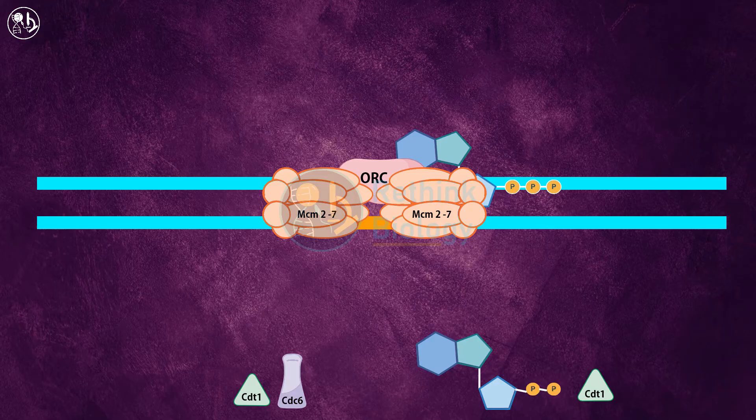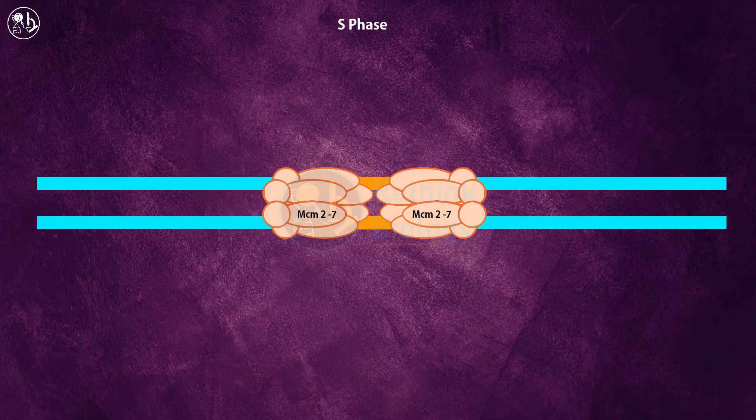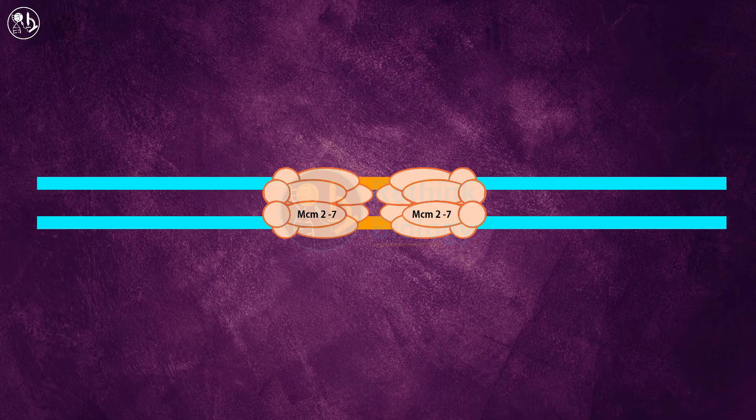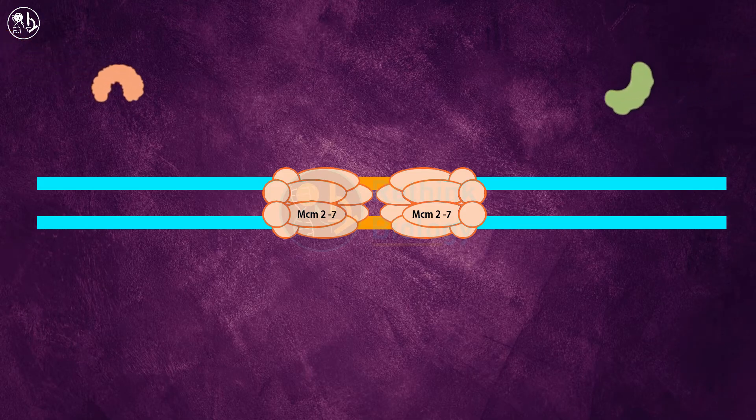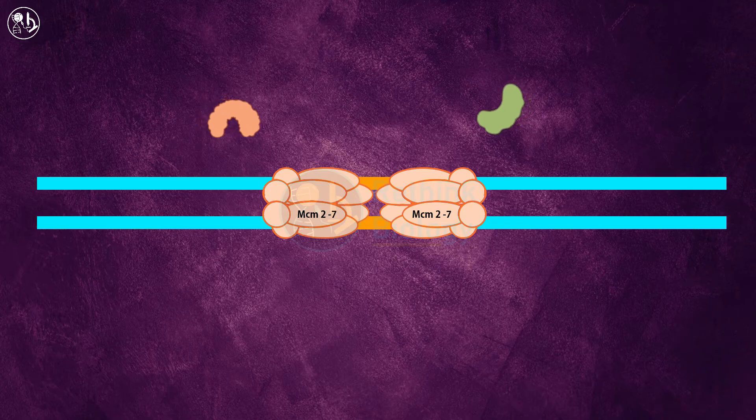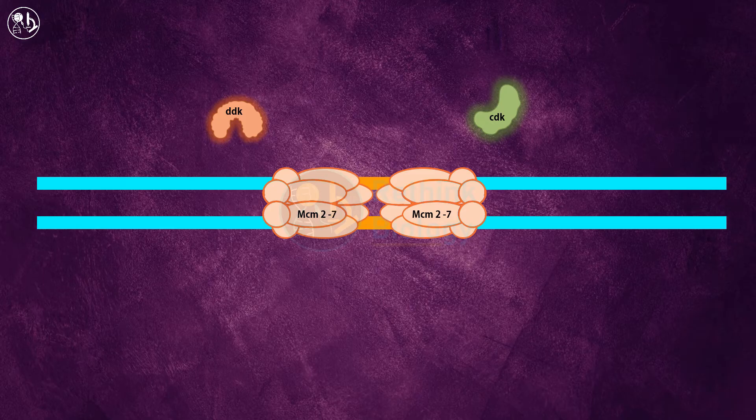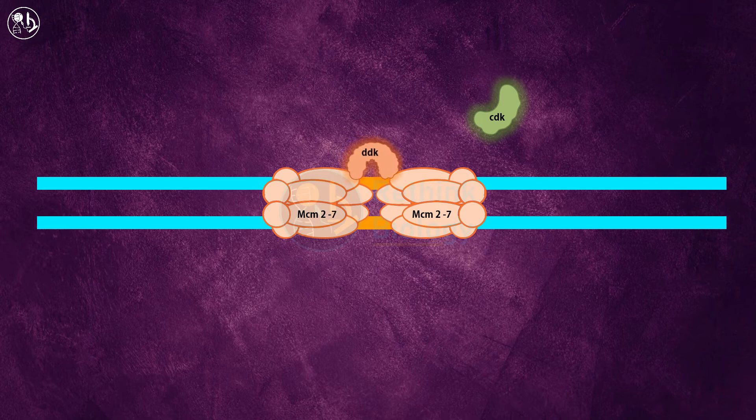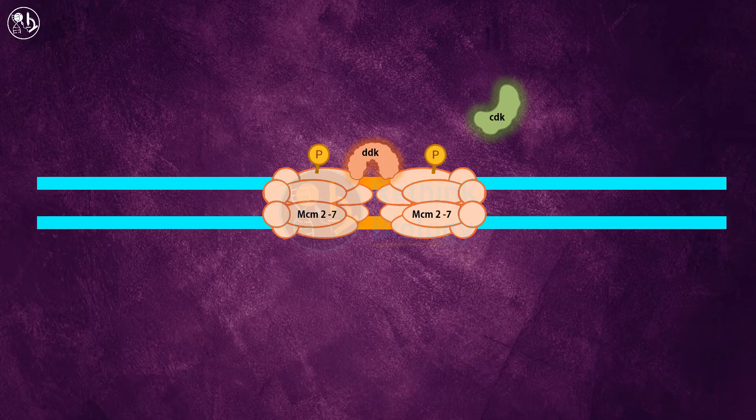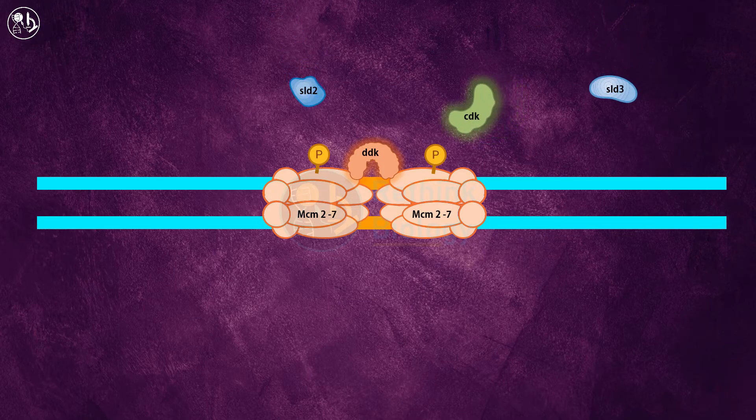As the cell enters the S phase of the cell cycle, initiation of replication starts. This starts with the activation of two protein kinases: cyclin-dependent kinase or CDK, and DBF4-dependent kinase or DDK. Once activated, DDK phosphorylates the MCM2-7 complex, whereas CDK phosphorylates two other replication proteins, SLD2 and SLD3.